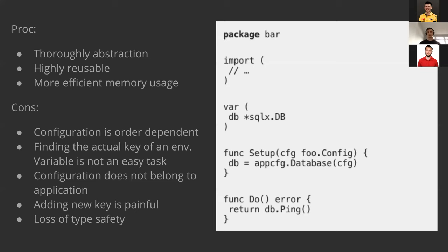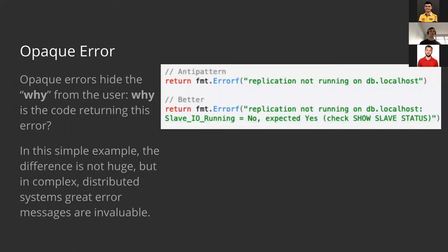We also use an empty interface, so we lose type safety and must make type assertions every time. As you may remember, we proposed using an exact typed structure in each package to configure each module separately, and provide this configuration as part of the package's API. It becomes clear and explicit how you can configure your system, and each module requires only its necessary configuration.